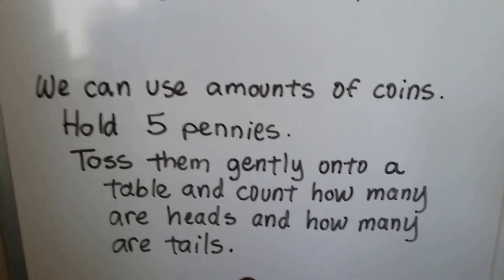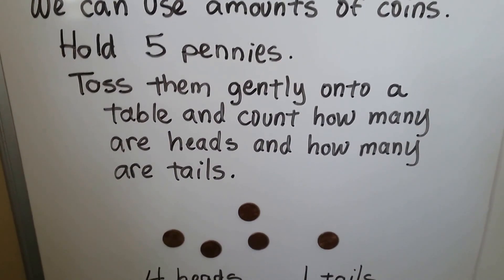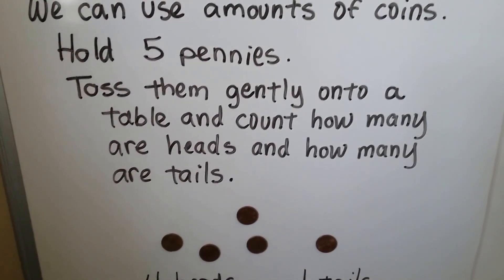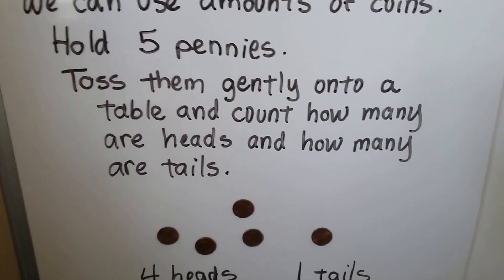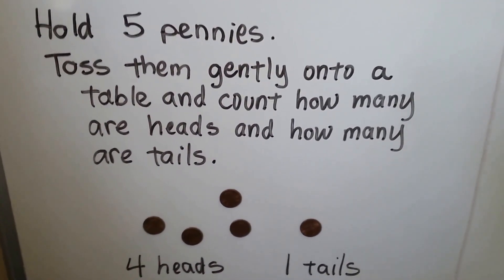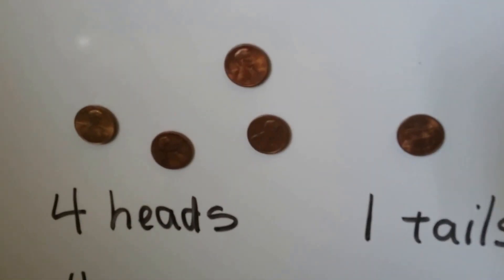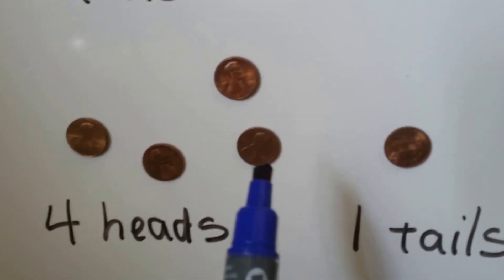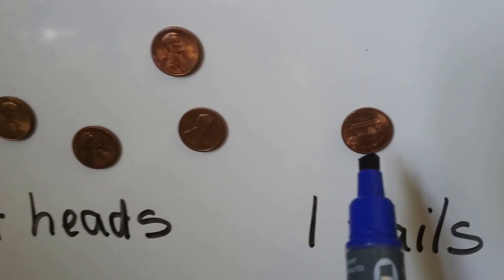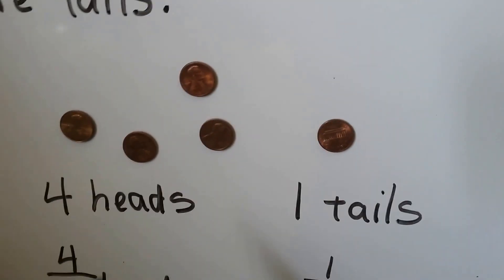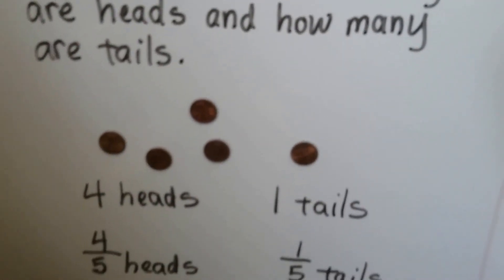We can also use amounts of coins. Hold five pennies and toss them gently onto a table, then count how many are heads and how many are tails. Look at the coin and see how many show the head of Abraham Lincoln and how many show the back of the coin. So we have four that are heads and one that is tails.